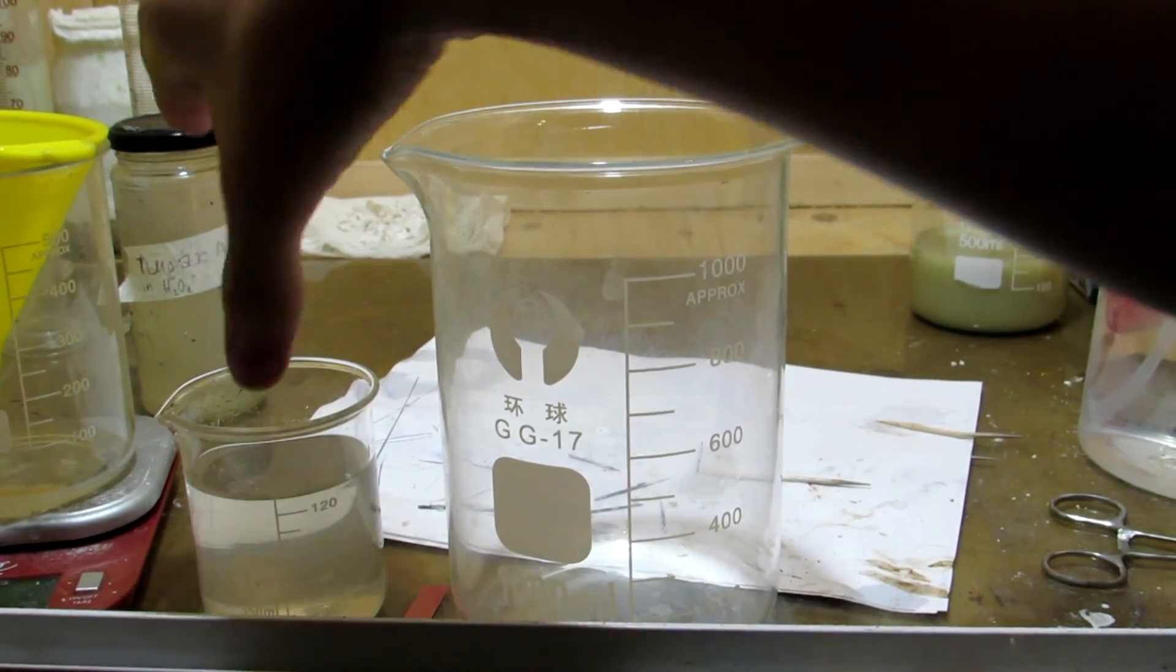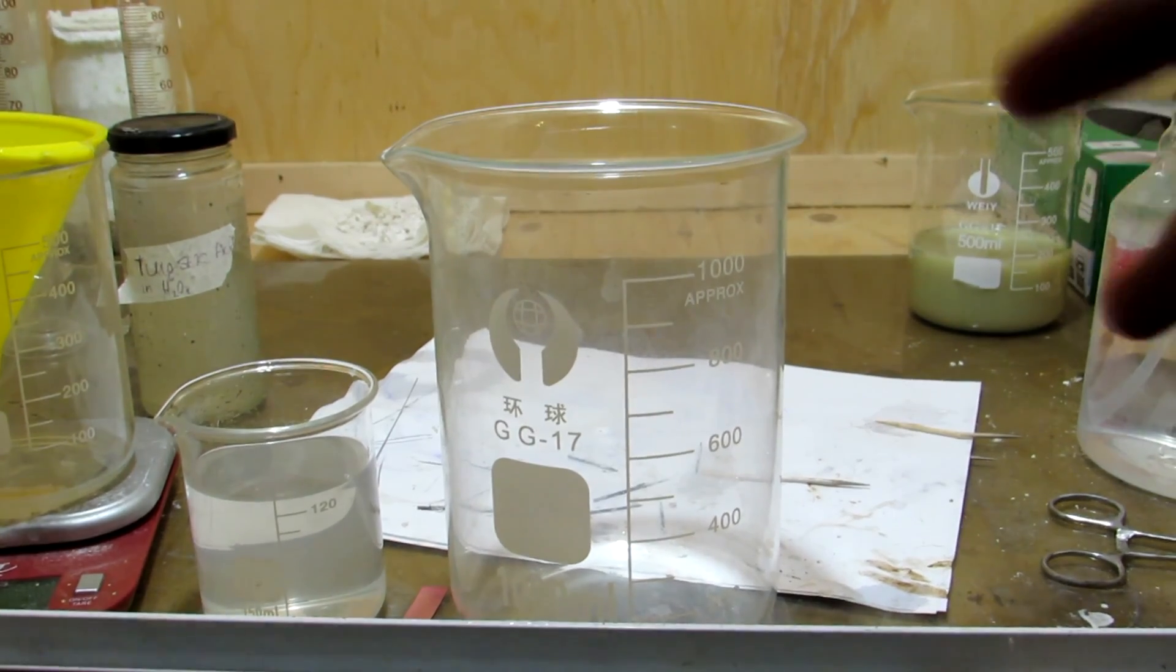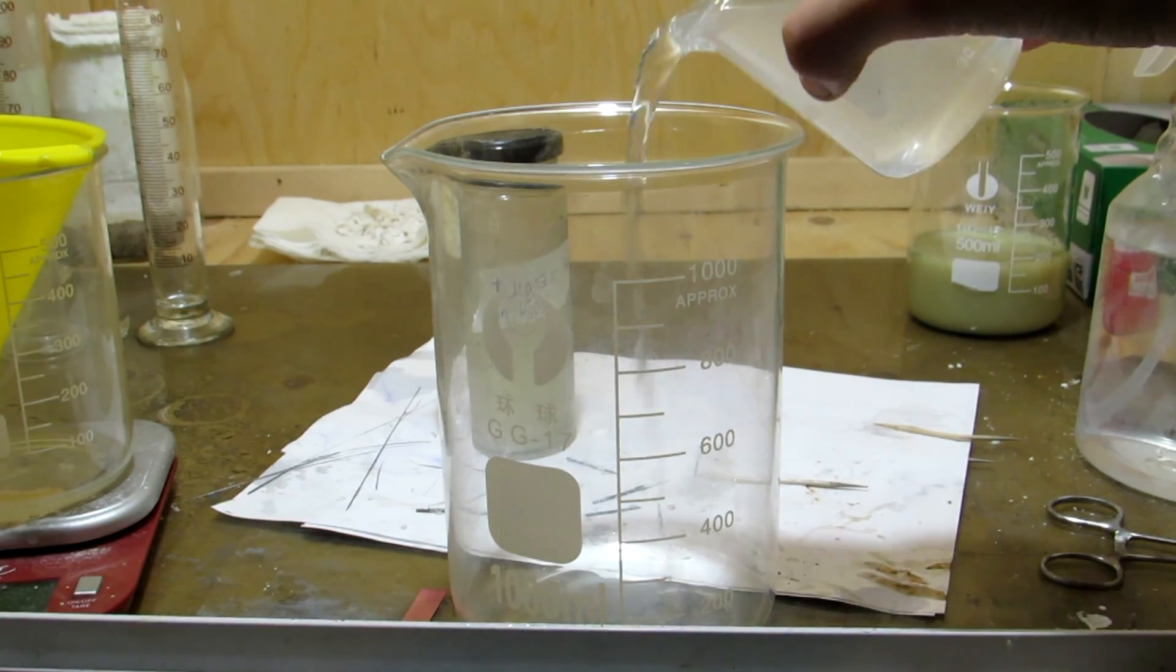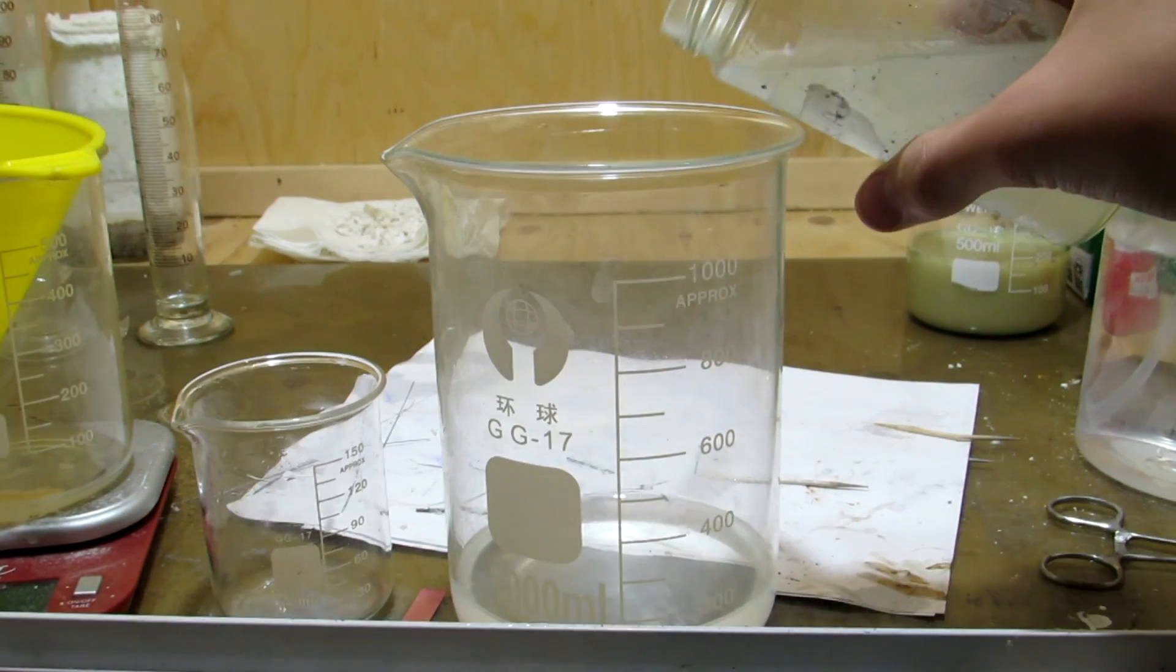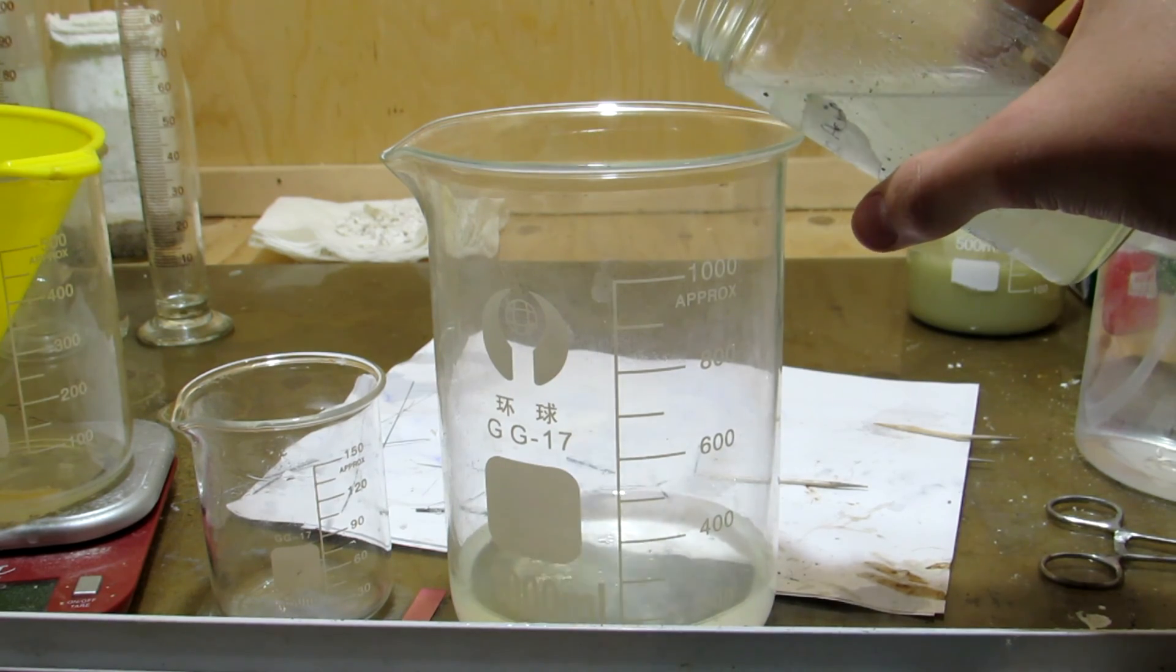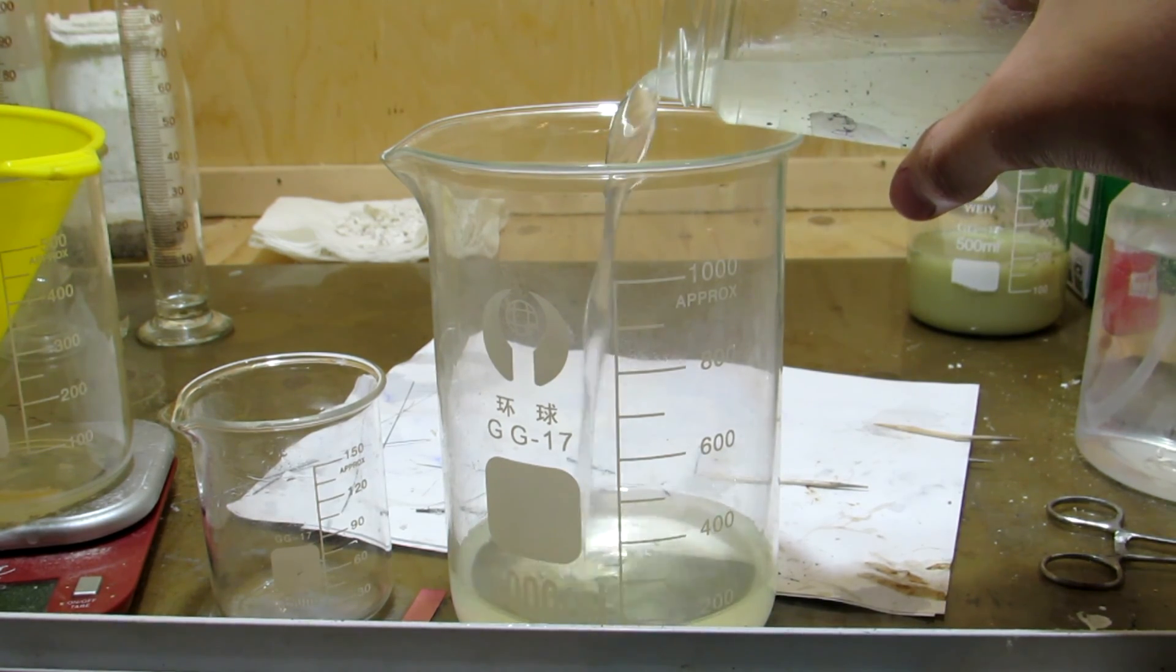While that is dissolving, we can convert the sodium tungstate and tungstic acid to tungsten trioxide. First, the tungstic acid solution is added to the sodium tungstate, and excess sodium hydroxide will react to form more sodium tungstate.